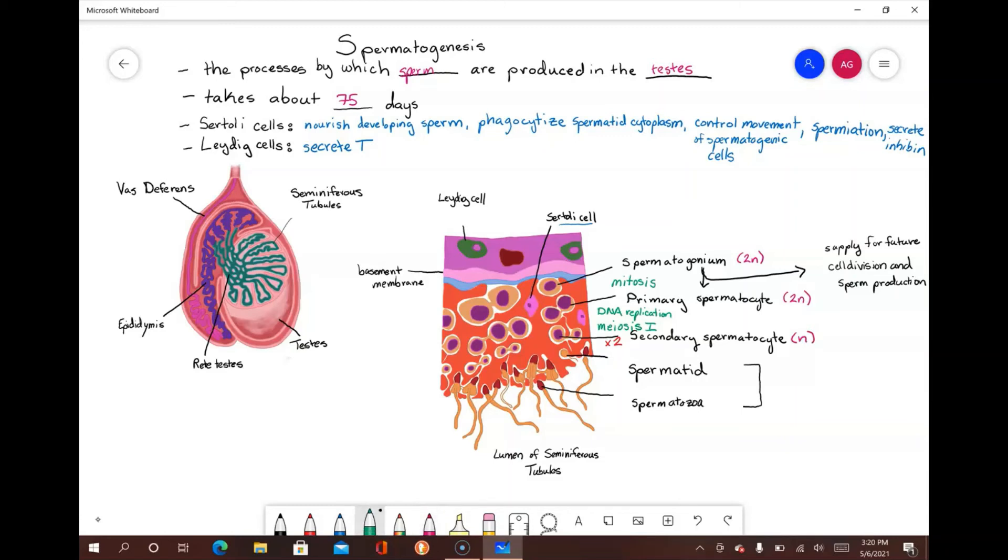Afterward, meiosis II occurs to produce four haploid cells called spermatids, which are essentially sperm without flagella. The final stage of spermatogenesis, known as spermiogenesis, involves the development of spermatids into sperm cells called spermatozoa.